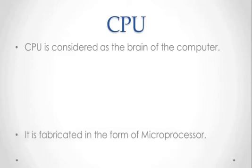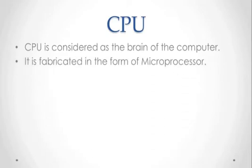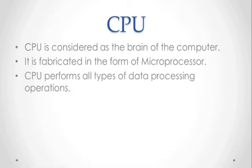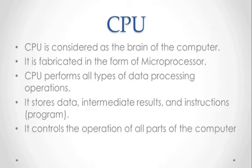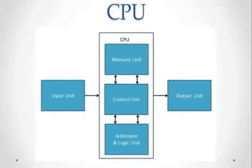The CPU, that is the Central Processing Unit, is considered as the brain of the computer. It is fabricated in the form of a microprocessor. The CPU performs all types of data processing operations. It stores data, intermediate results, and instructions, and it controls the operations of all parts of the computer. The CPU itself has three components: Memory Unit, Control Unit, and ALU.